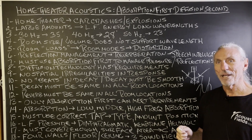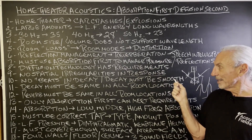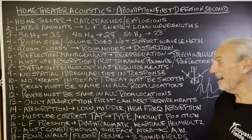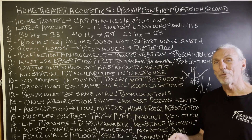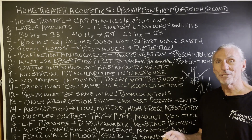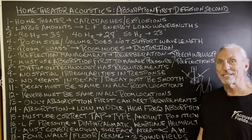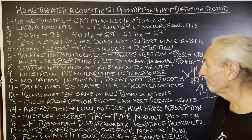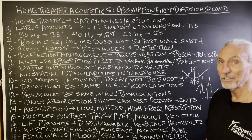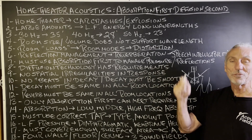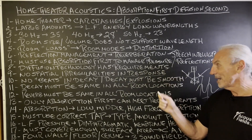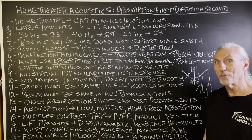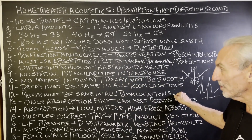Diffusion acts like a magnifying glass — it will accentuate and show you where your problems are that you didn't treat. The goal of diffusion is to improve resolution and make the room sound larger, so you don't want to give it a task it can't perform — it'll just fight you and make things worse. Decay rate in all room locations must be the same; RT30 and RT60 decay times must be uniform. Reverb must be the same in all locations if you're going to use diffusion.